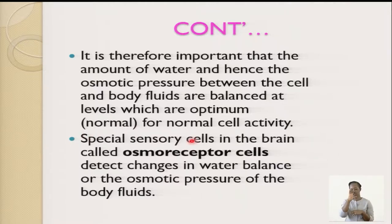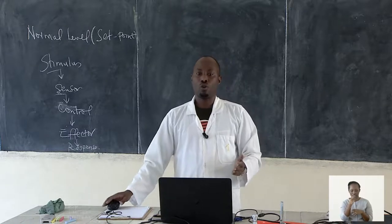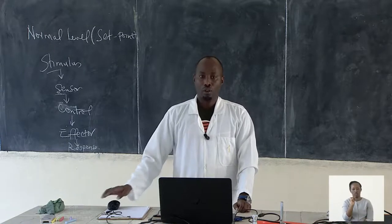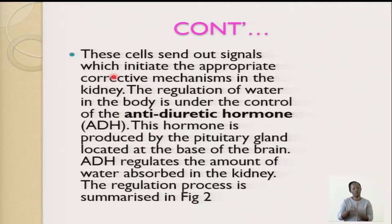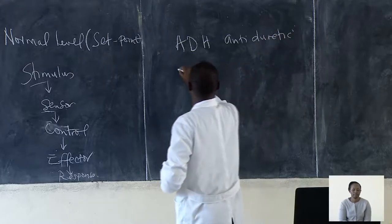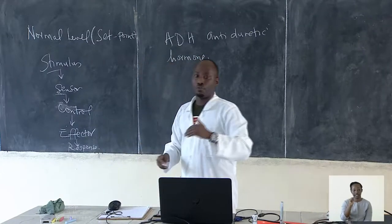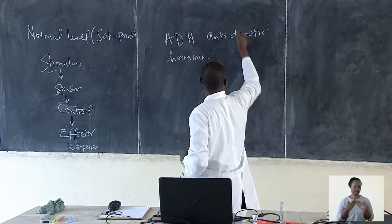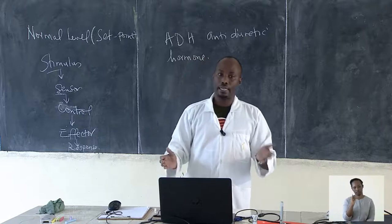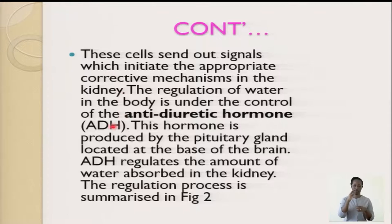Special osmoreceptor cells detect any change in water content or osmotic pressure of the body fluid. The water in our body is balanced by a hormone called antidiuretic hormone, ADH. Regulation of water in the body is under the control of antidiuretic hormone, which is produced by the pituitary gland located at the base of the brain.